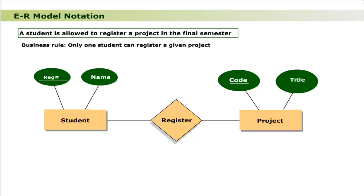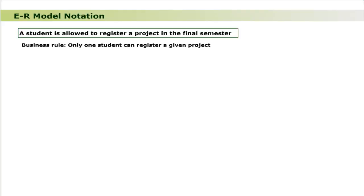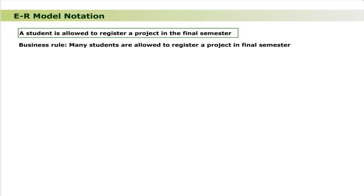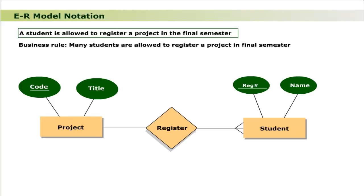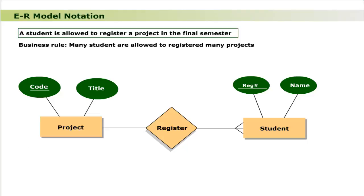The type of association changes in an ER model if the business rules are changed. Let us change the business rule so that many students are allowed to register a given project in the final semester — the type of association changes to one-to-many. Now if we change the rule so that many students are allowed to register many projects in the final semester, the type of association changes to many-to-many.